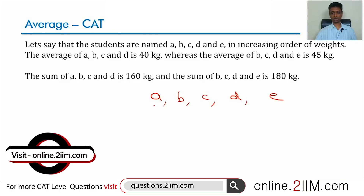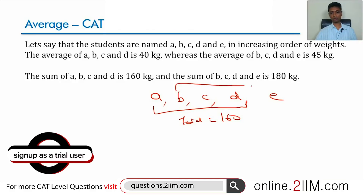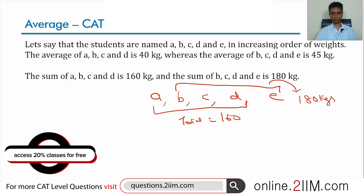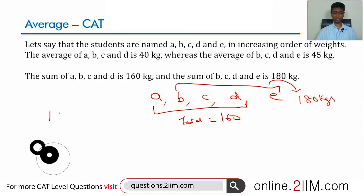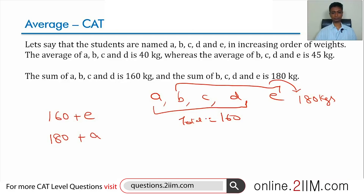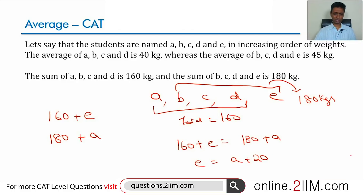The four lightest ones have an average of 40, so their total is 160. The four heaviest have an average of 45, so their total is 180. The total of all five can be expressed as 160 plus e (lightest four plus the heaviest) or as 180 plus a (heaviest four plus the lightest). So 160 plus e equals 180 plus a.